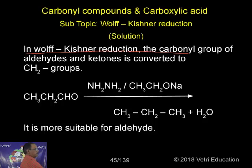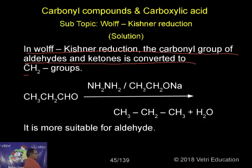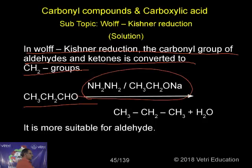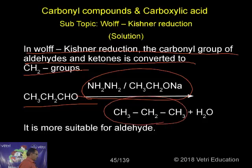In Wolf-Kishner reduction, the carbonyl group of aldehydes and ketones is converted to a CH2 group. The reagents are hydrazine and sodium ethoxide. It undergoes first a condensation reaction, followed by elimination, producing an alkane and water.